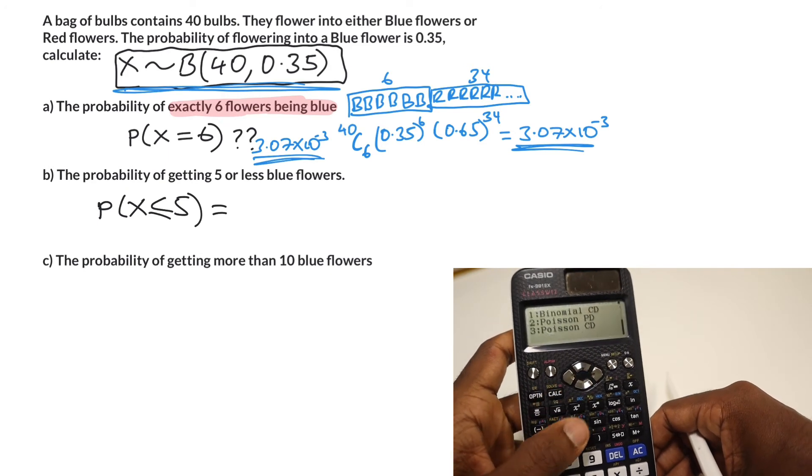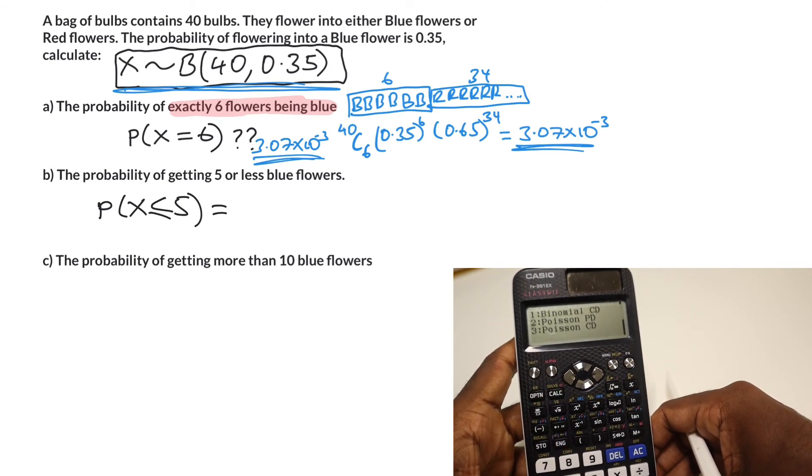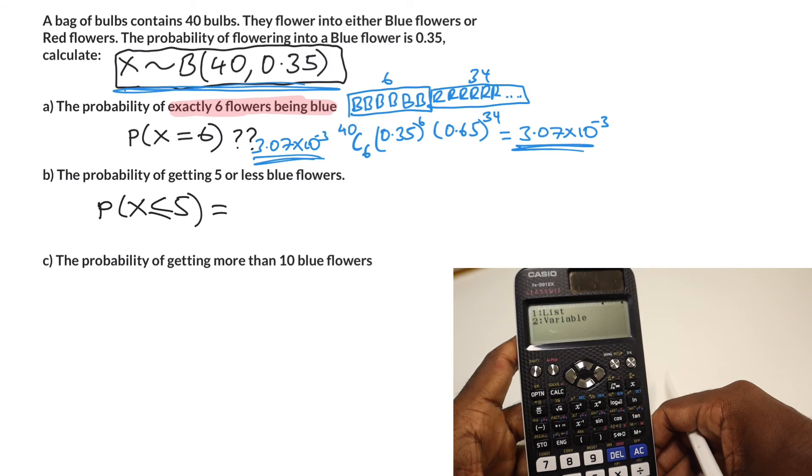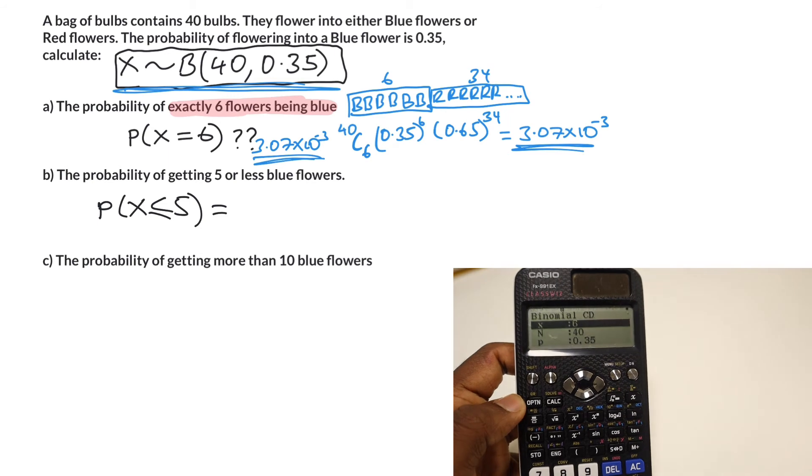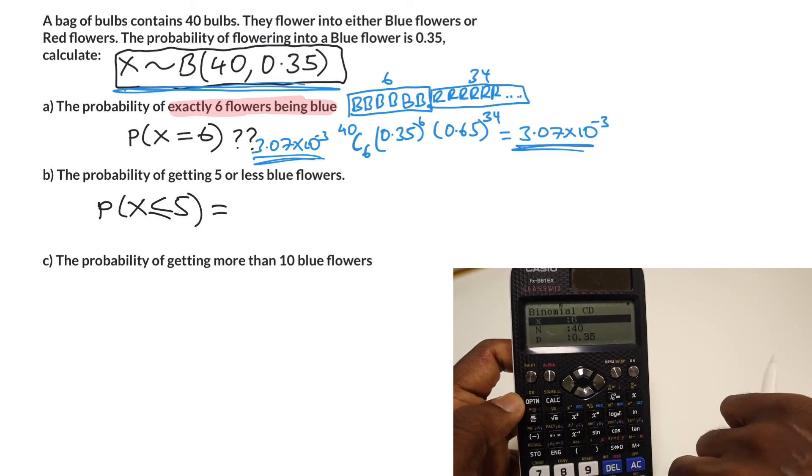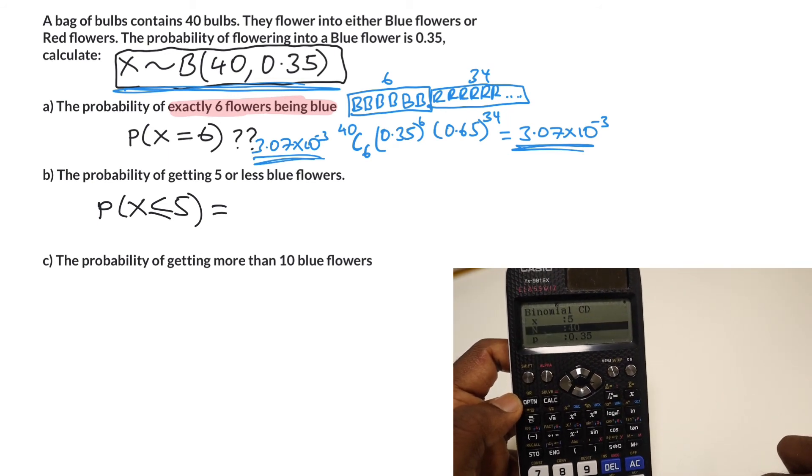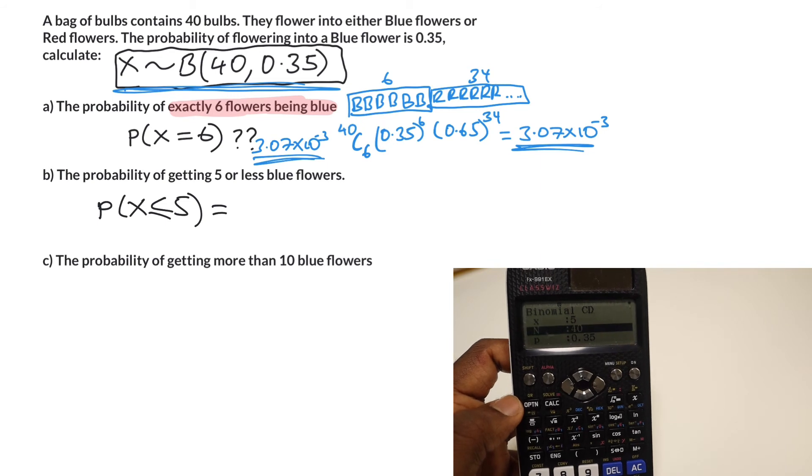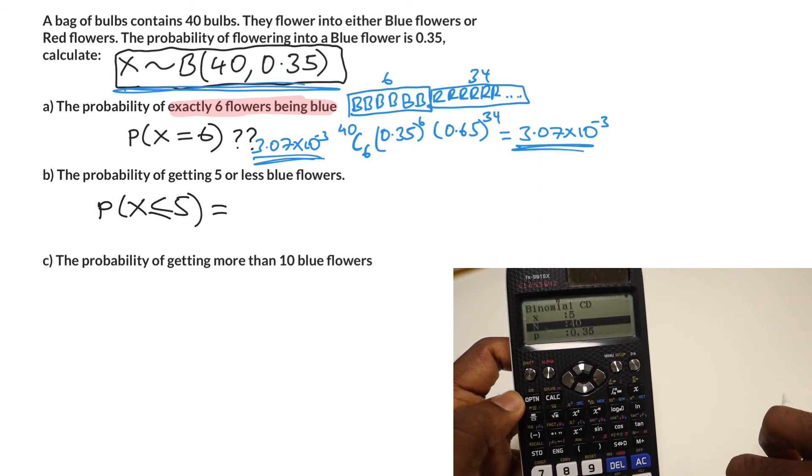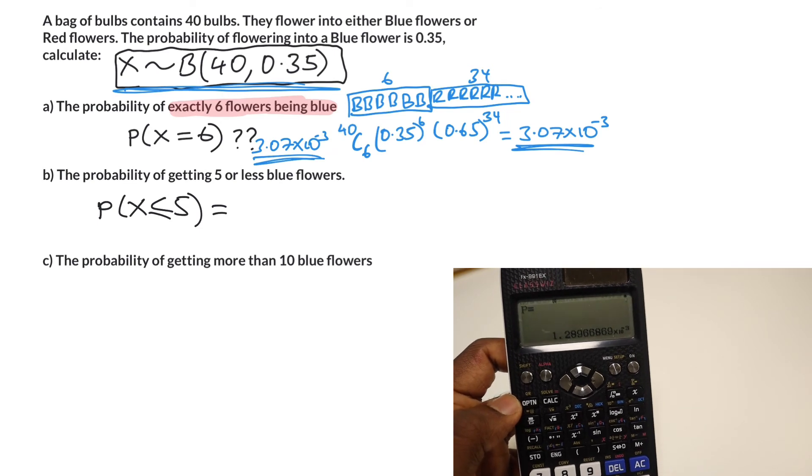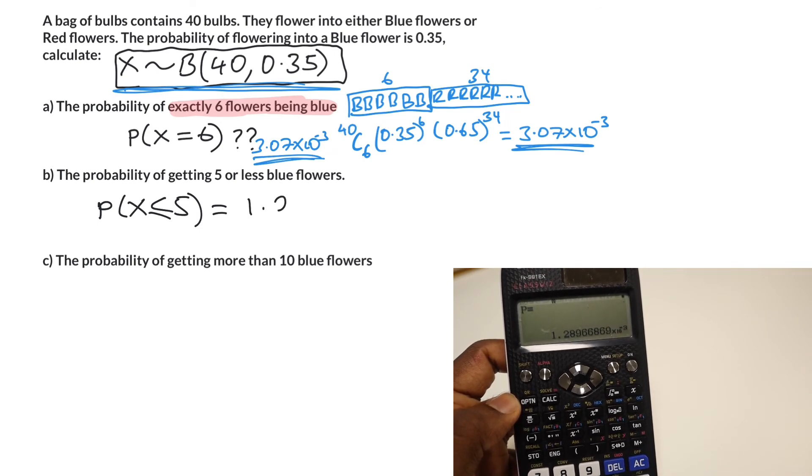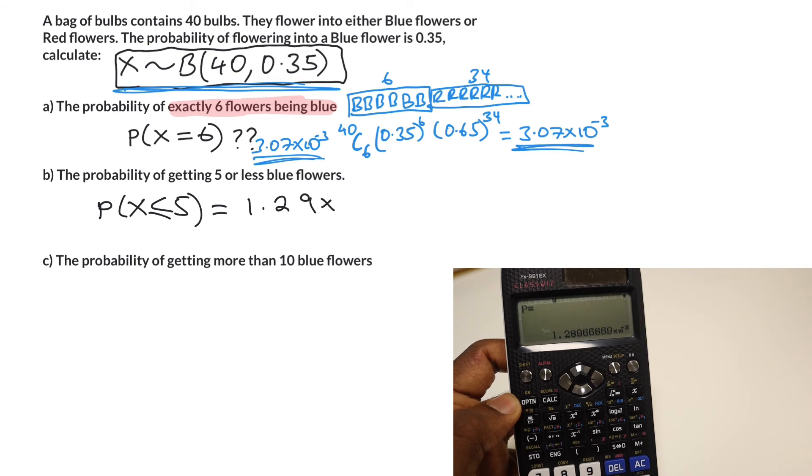We need to go back to our distribution again, but this time what we need is the binomial CD, cumulative distribution. We'll go for variable again. Now we need to enter in our info. This time what are we looking for? We're looking for five, so hit five. Everything else stays the same. There's still 40 bulbs and the probability is still 0.35. That gives us an answer which is 1.9 times 10 to the minus 3.